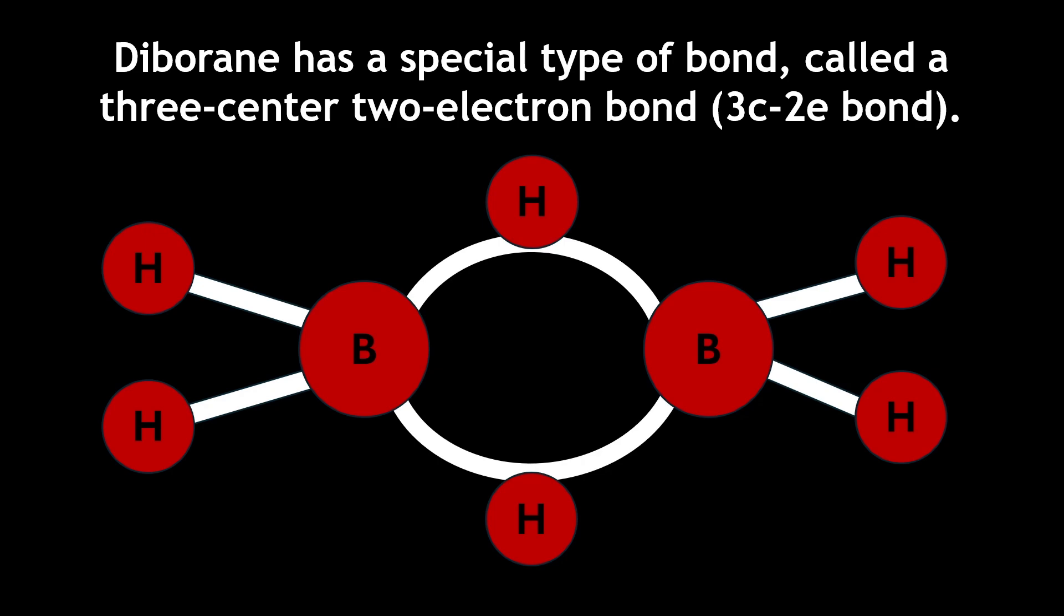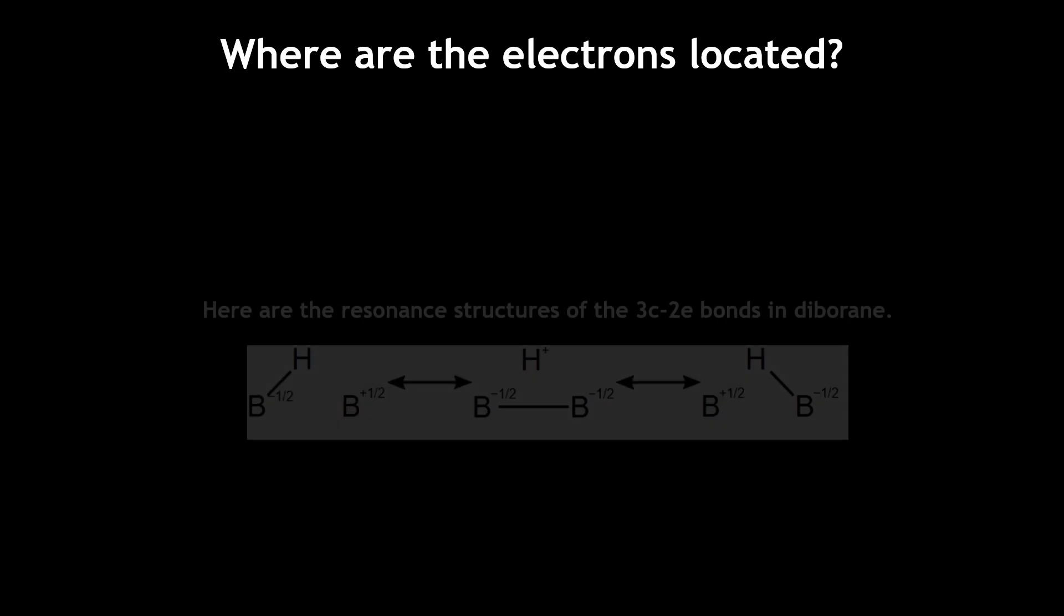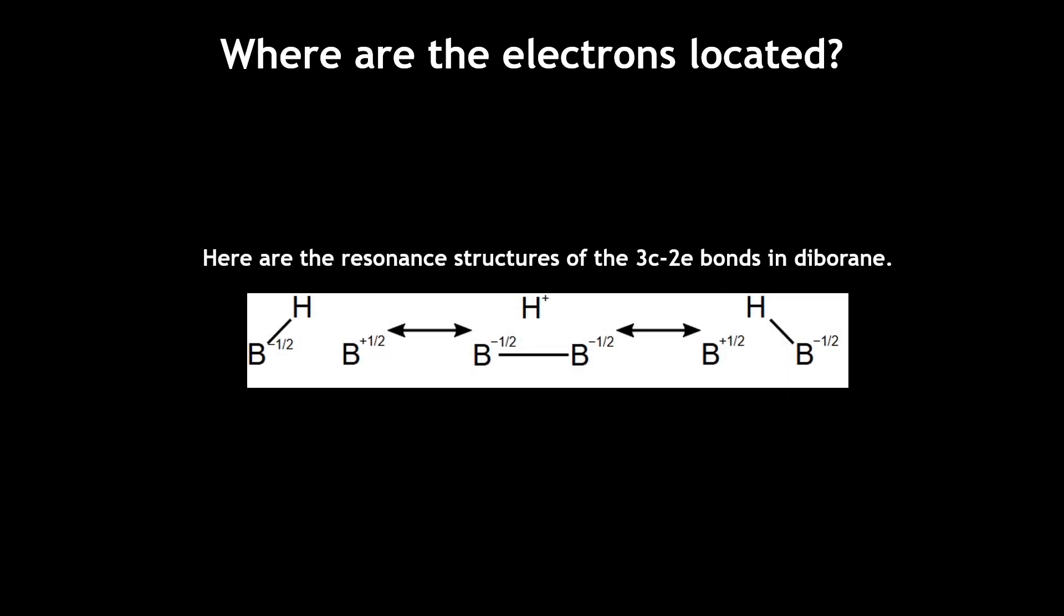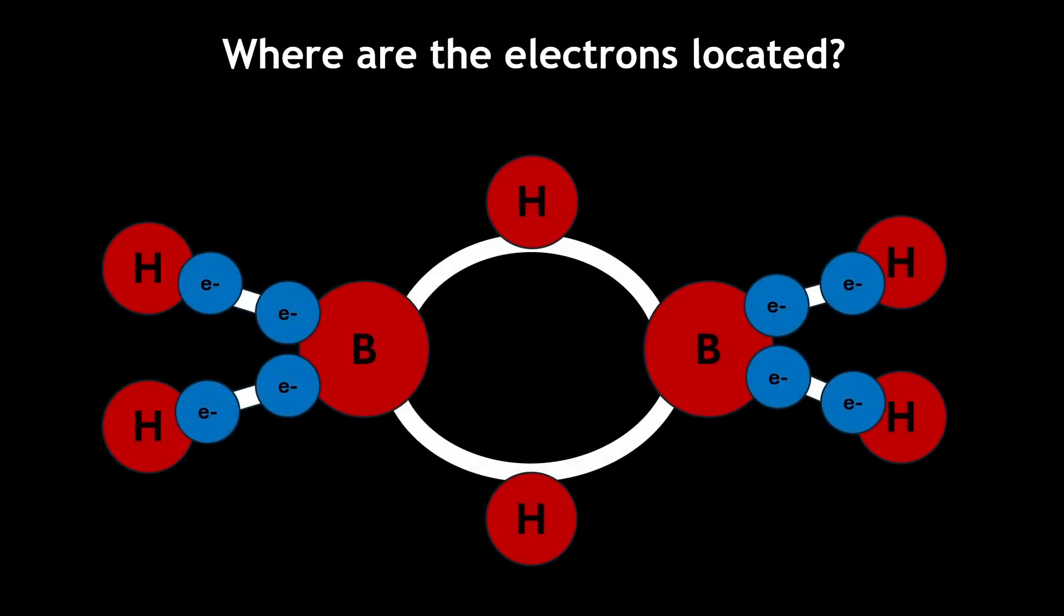This type of bond occurs when three atoms share two electrons. When observing the resonant structures of the 3c-2e bonds in diborane, we can now locate all of the electrons. The terminal hydrogen atoms bond to the boron atoms normally, bonding with two of boron's three valence electrons.